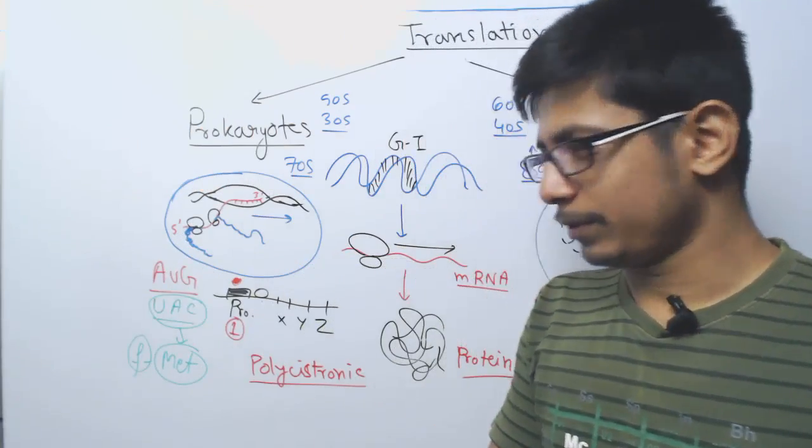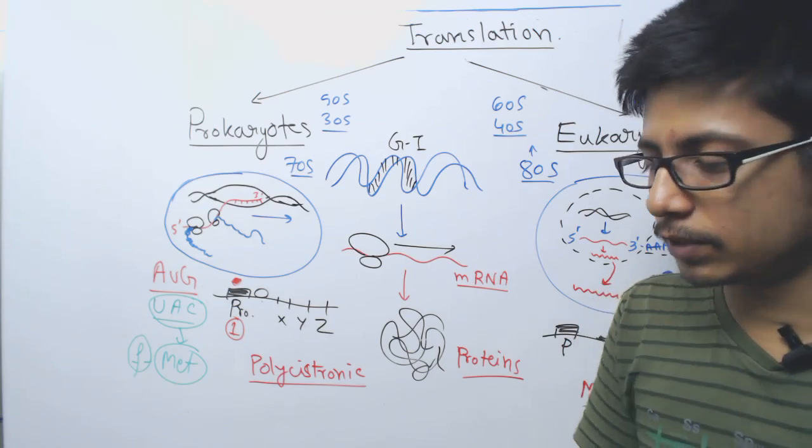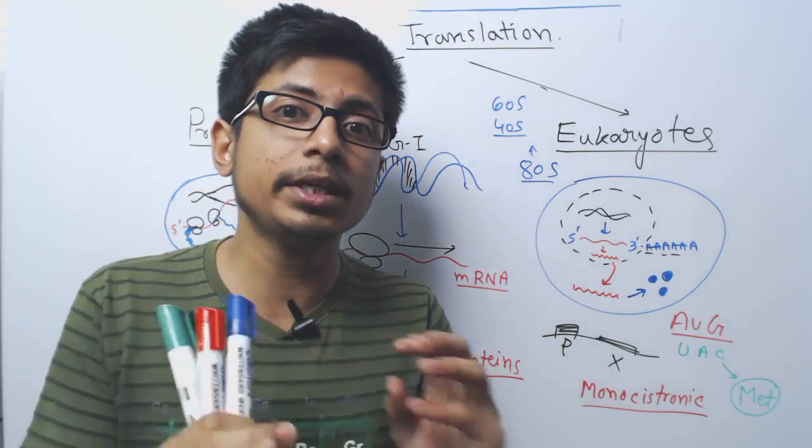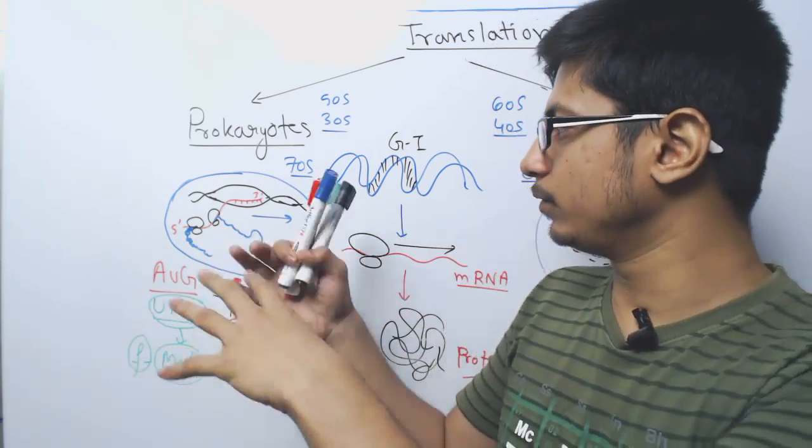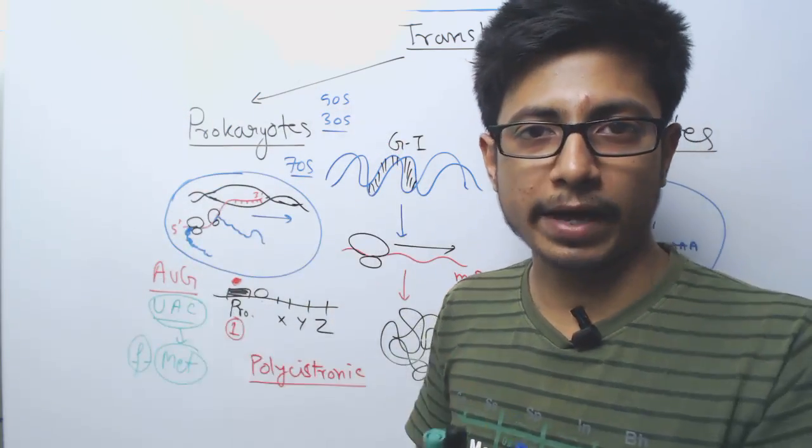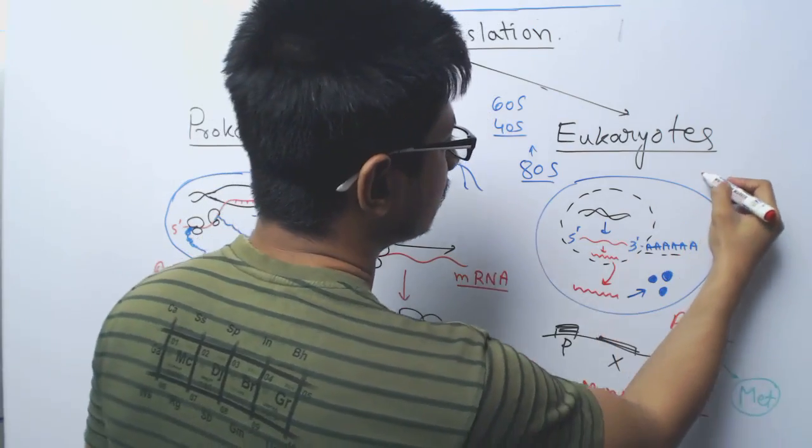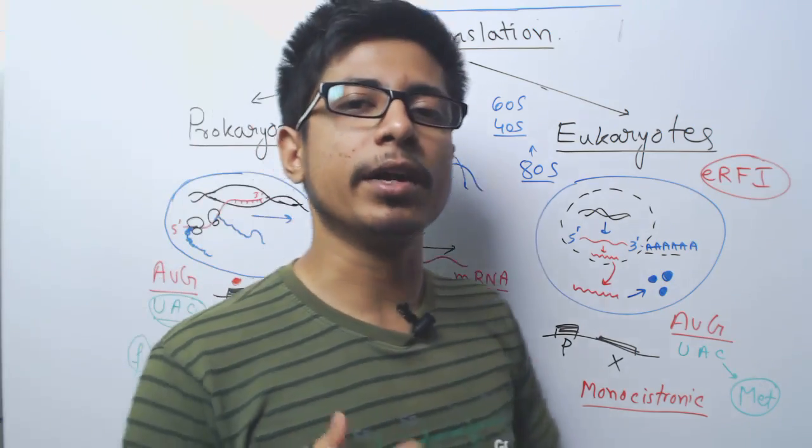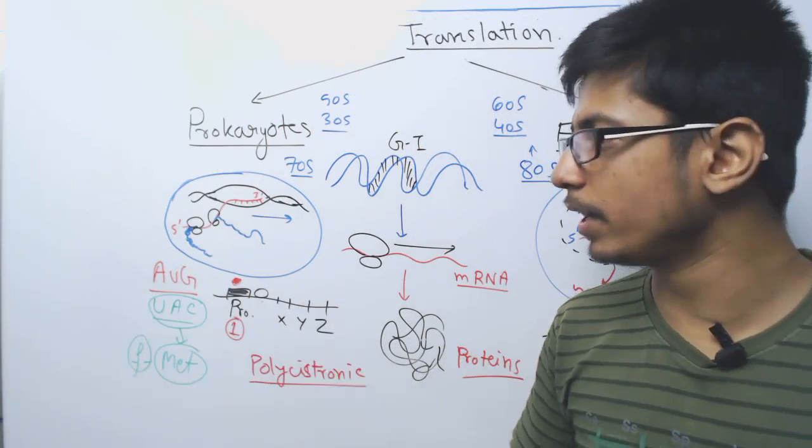About the termination, the end point of the translation process. The termination process in prokaryotes requires three different release factors: release factor 1, 2 and 3 for the release and reassembly and removal, dissociation of RNA, ribosome, all those things. But in eukaryotes there is only one release factor and that is known as ERF1. In prokaryotes RF1, RF2 and RRF ribosome recycling factor are the three things required for termination.